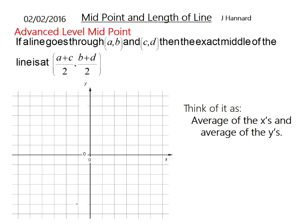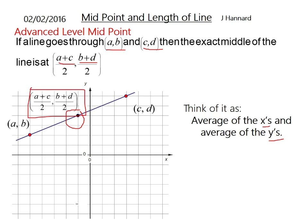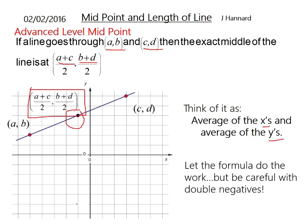Today we are doing advanced level midpoint. If the line goes through AB and CD, then the exact middle of the line is at A plus C over 2 comma B plus D over 2. Think of this as the average of the X's and the average of the Y's. Your midpoint is the geometrical center of that line. There is your formula there. You have to learn that one as well, but it is a nice and easy one to remember because it is common sense really. If you want the exact middle, it is known as the average.